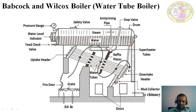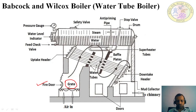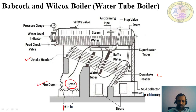In this boiler there is a fire door and a grate. The grate is a wheel-chain arrangement — on the wheels there is a chain, and on top of the chain the fuel, for example coal, is moving. It is fed from the fire door. There is also an uptake header and a downtake header. Air is supplied from the bottom to the grate, where burning of the fuel takes place.